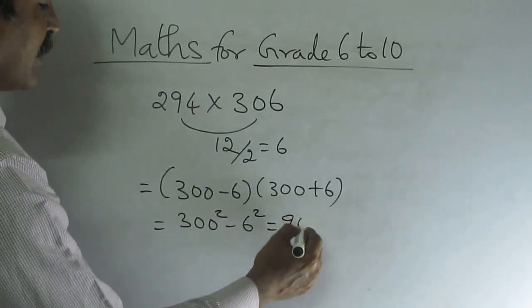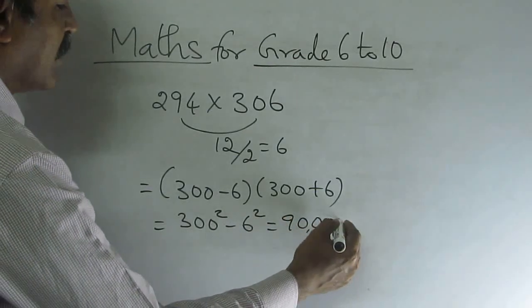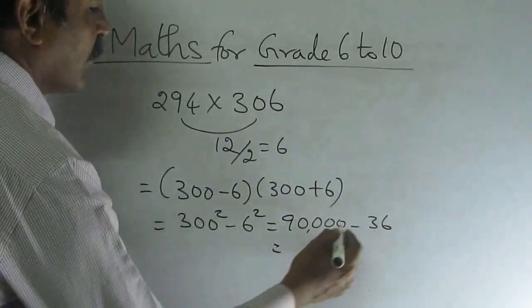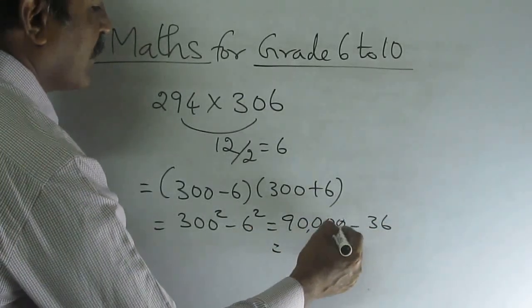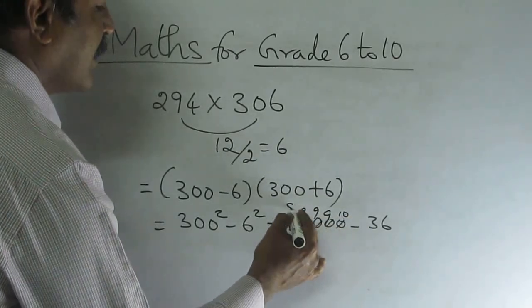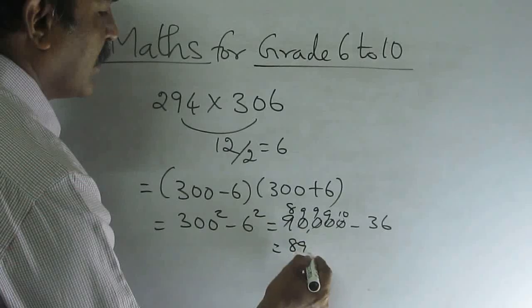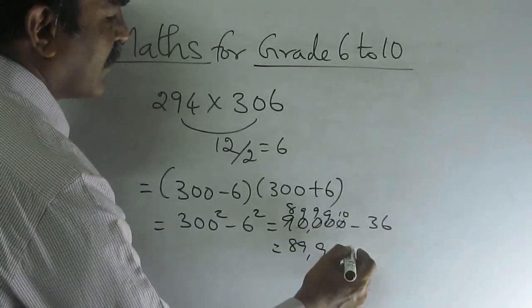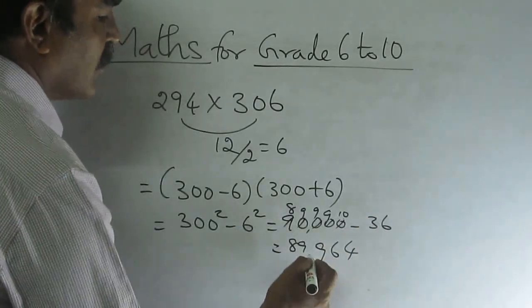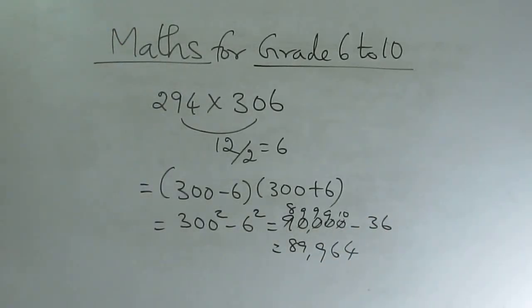What is 3 into 3? 9. So this is 90,000 minus 6 into 6? 36. So now just see what you have to do is the subtraction. This is 10, 9, 9, 9, 9, 8. So 89,900 and this number 10 minus 6 is 4. 9 minus 3 is 6. So 89,964.